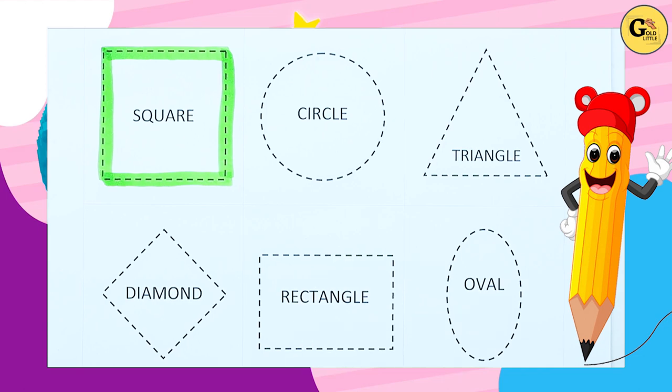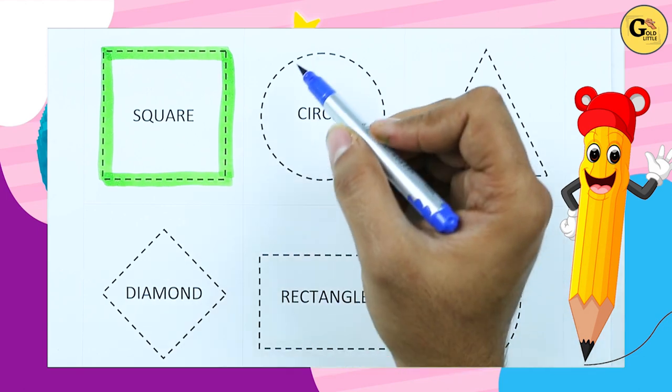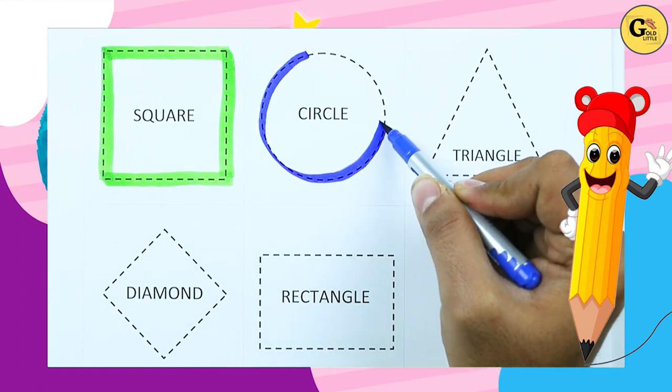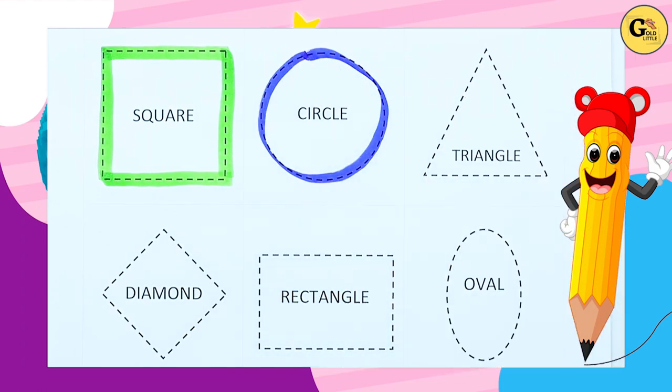It's called square with green color. Circle. Round, round, round, round. It's a circle with blue color.